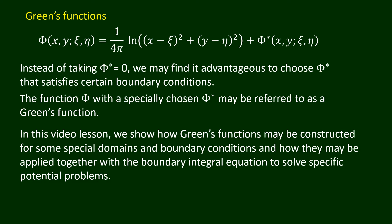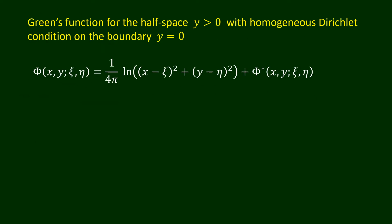The term potential problem is usually used to refer to a boundary value problem governed by the Laplace's equation. We will now construct a Green's function for the half space y strictly greater than 0. The Green's function capital Phi is required to satisfy the homogeneous Dirichlet condition on the boundary y equals 0, that is, the condition capital Phi equals 0 at y equals 0. Mathematically, the problem of constructing the Green's function may be stated as follows.